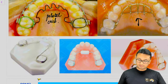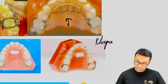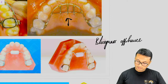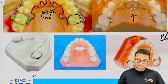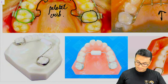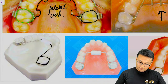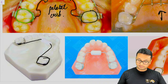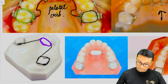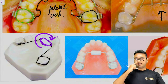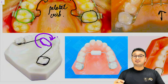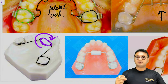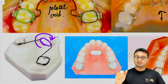Another appliance that gained popularity is the Bluegrass appliance, developed by Haskell and Mink. It is also a fixed appliance with molar bands cemented onto the molars. It has a palatal bar with an acrylic roller that the patient can roll with the tongue. This serves as reminder therapy, helping the patient stop tongue-thrusting and digit-sucking habits.